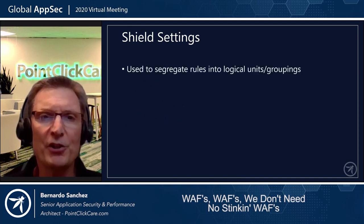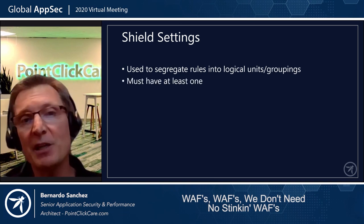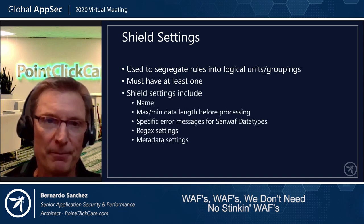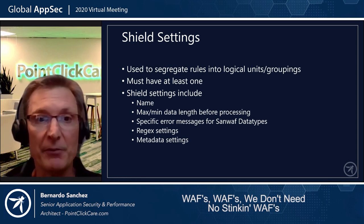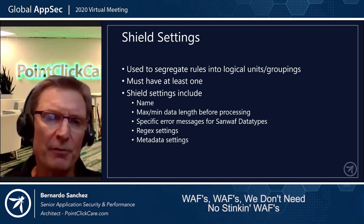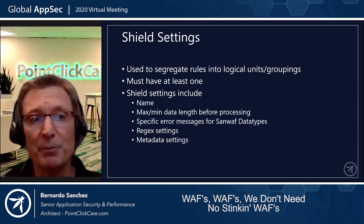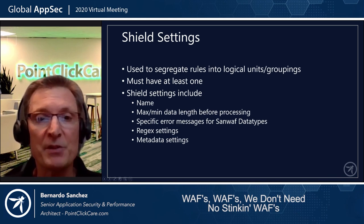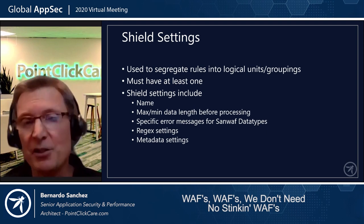What are shields? Shields are logical units to group your rules. You can have one shield with all your rules, or logically group rules into multiple shields. Shield settings include the shield name — so you know which shield caught an error — a maximum/minimum data length before processing. For example, if you have a shield examining cross-site scripting and you can't do an XSS exploit under four characters, you can set the minimum to four characters, and the shield won't even fire below that, saving processing time. Shields also have specific error messages that override global error messages.